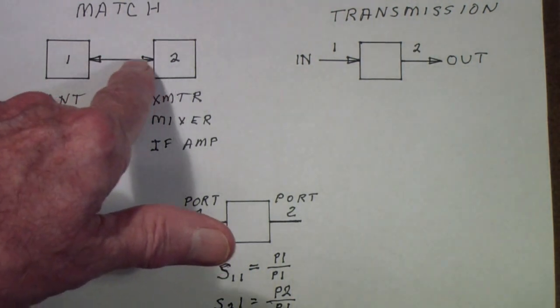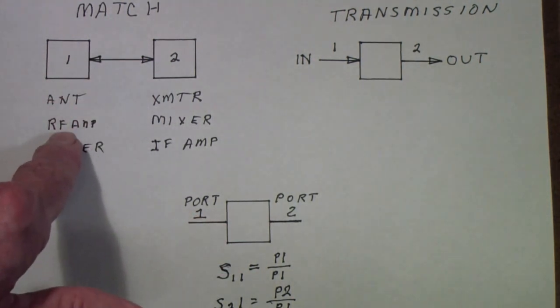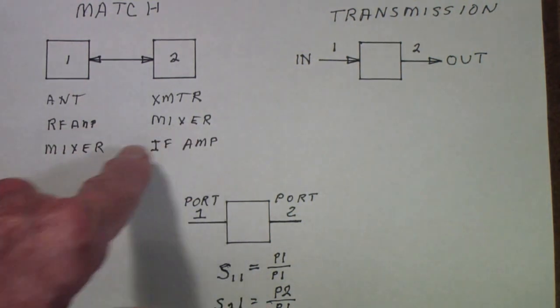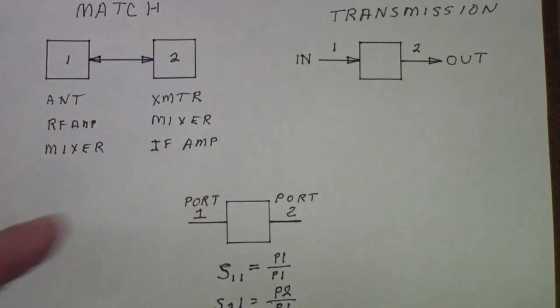Or you might want to match an RF amplifier to a mixer in a receiver, or a mixer to an IF amplifier. Anytime that you have something that operates over a range of frequencies and you want to match it, you use something like a vector network analyzer.